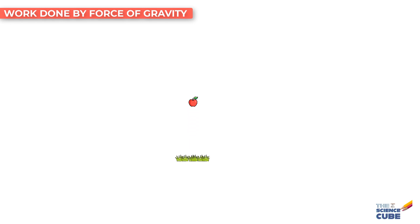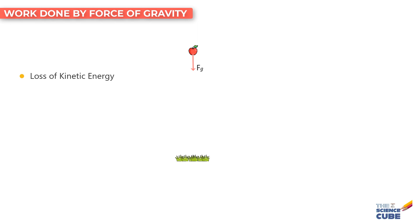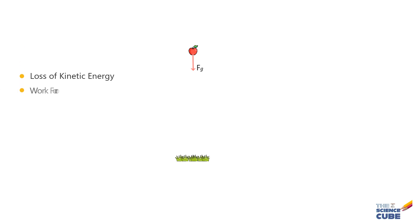Why does an apple thrown up in the air come to a stop? We know that it is a force of gravity acting in the downward direction that slows it down. Interestingly, the same idea can be explained in terms of the loss of kinetic energy of the apple as it rises up and the work that the force of gravity does on it.